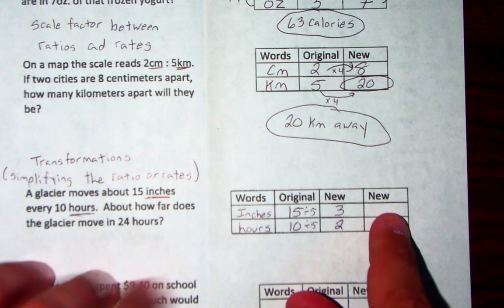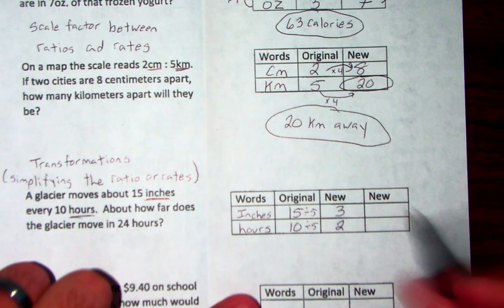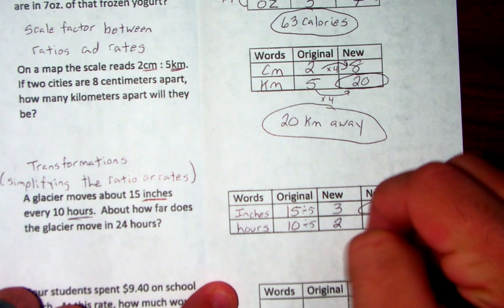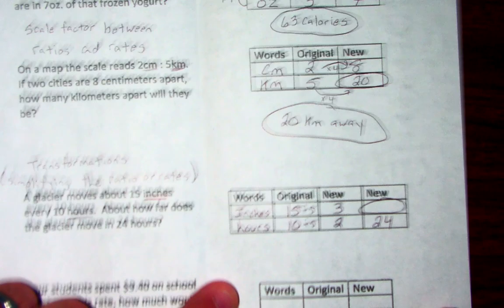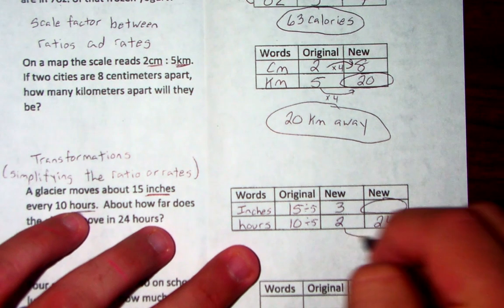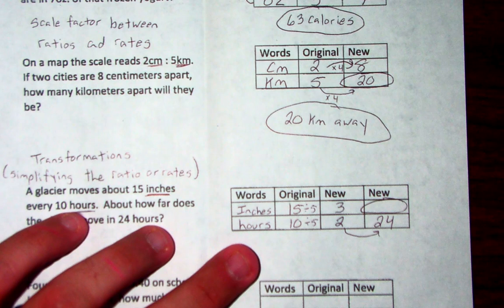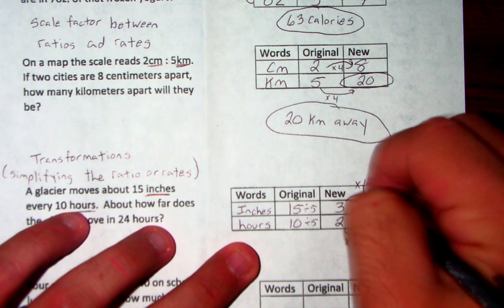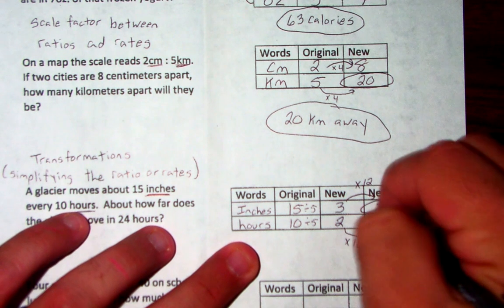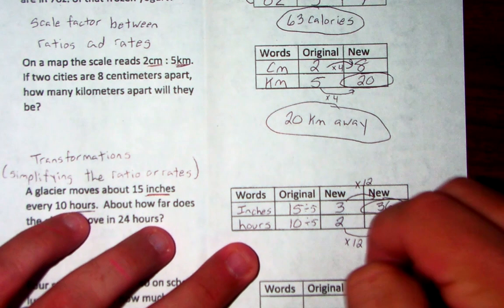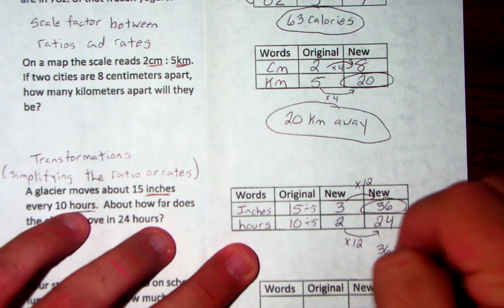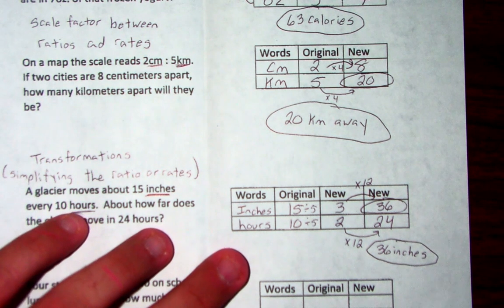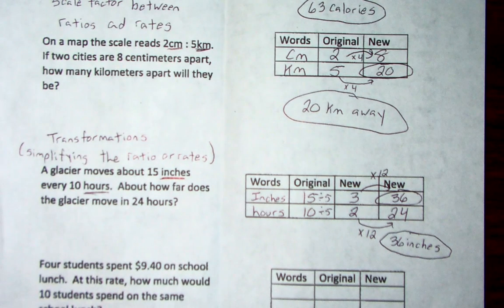Our other new information says, how far does the glacier move? So this is what we're solving for, in 24 hours. Now this is much easier to deal with. To go from 2 to 24, what did you multiply by? It'll be multiplied by 12. 3 times 12 will give us 36. So the glacier moved 36 inches in 24 hours, which is actually very interesting. Okay. Last one.